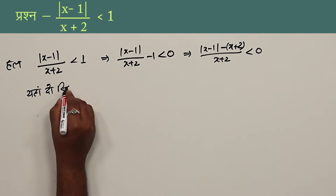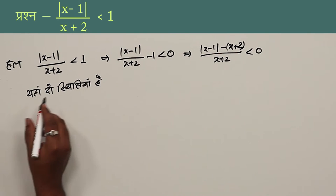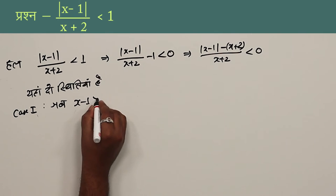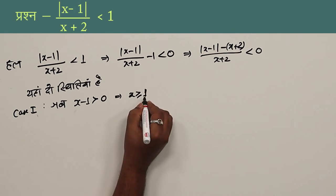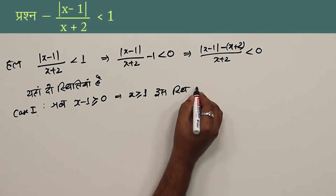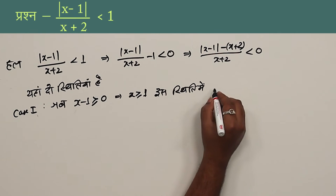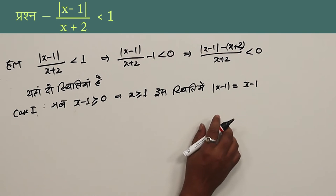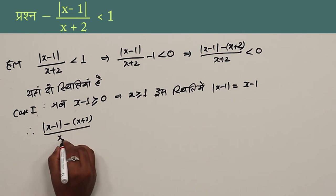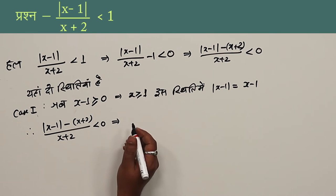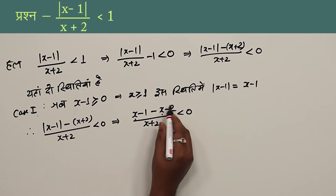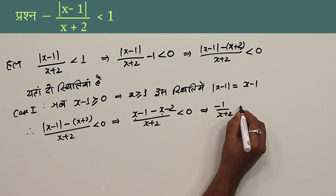Sub-case: when x minus 1 is greater than 0, meaning x is greater than or equal to 1. In this sub-case, mod of (x-1) equals (x-1). The expression becomes x minus 1 minus (x+2) upon (x+2) is greater than 0, which simplifies to minus 3 upon (x+2) is greater than 0.